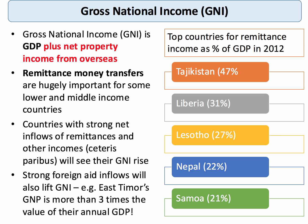For example, some countries have a fairly low GDP but they receive a lot of external income from remittances. This is money earned by people living and working overseas which they send back to their country of origin. The nations on the right hand side of the chart all have, in 2012, a level of remittance income of more than 20% of their national income adding to GNI.